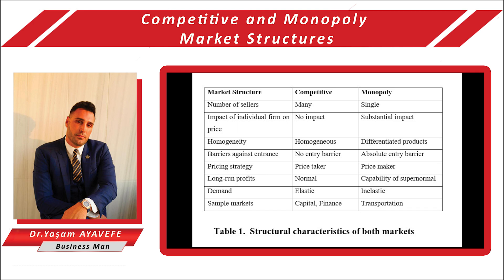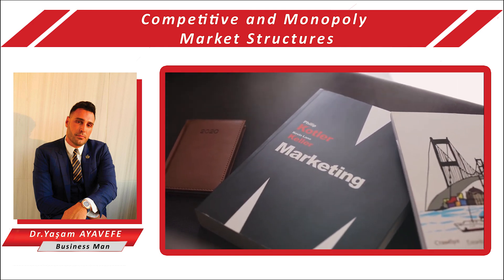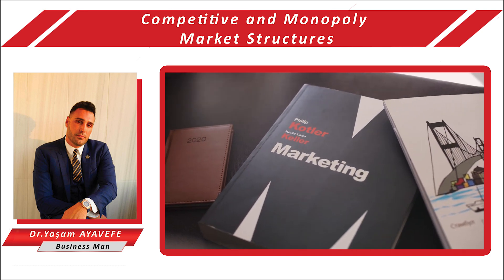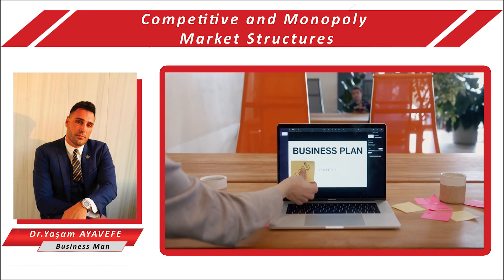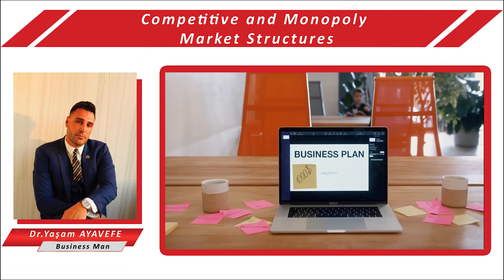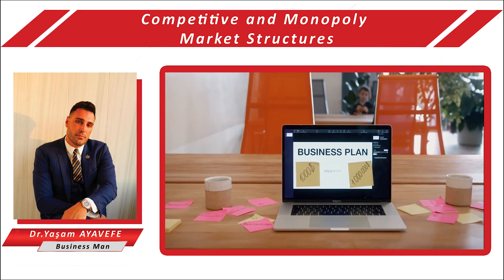Moreover, the variation between price and MC in monopoly markets causes supernormal profits, while market competition leads firms to stay under normal profits. Even though competitive markets have predictable supply curves, in monopoly they cannot be known. On the demand side, the demand curve in competition is elastic, which depends on the number of firms in the market, whereas price is determined by the monopolist in a monopoly market. Under both competitive and monopoly markets, firms are intended to maximize their profits in a rational manner.